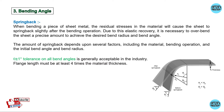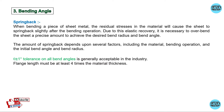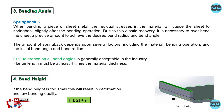The flange length must be four times the material thickness. Spring back depends upon the material, bending operation, bend angle, and bend radius. For bend height, the bend height must be greater than or equal to two times the thickness plus the radius. If the bend radius is too small, it results in deformation and low bending quality.